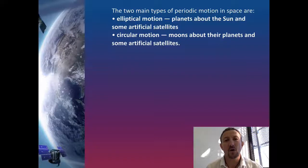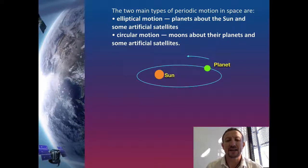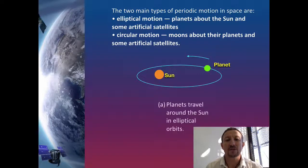Kepler put forward the idea of elliptical motion, which basically is the movement of planets around the sun and in some cases they might have some artificial satellites. So we get this scenario that looks like this for the elliptical motion.